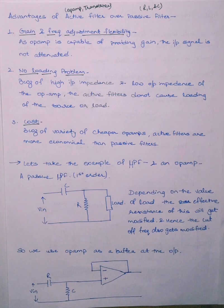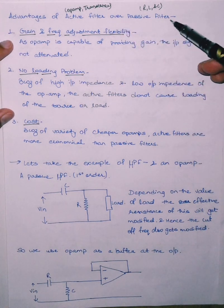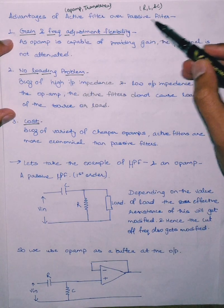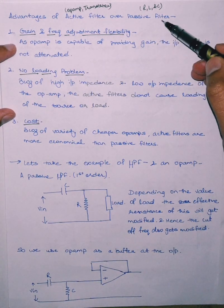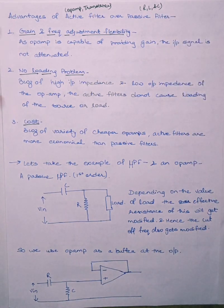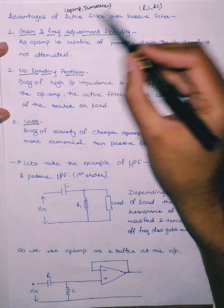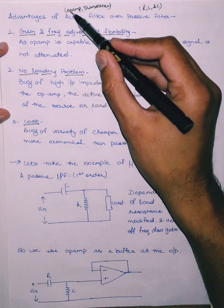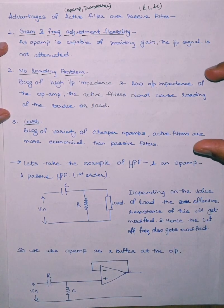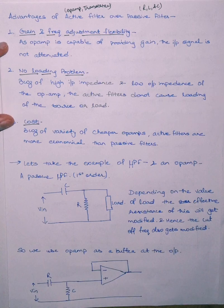Hello all. Today we will discuss the different advantages of active filters over passive filters. In the previous lecture, we studied that passive filters consist of only passive components — resistor, inductor, and capacitor — whereas active filters consist of passive components plus active components like operational amplifiers and transistors. Here I will discuss the advantages of active filters by taking the active component as an operational amplifier.